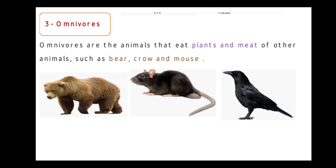Number 3. There are also animals that eat both plants and meat. Like what, Junior 2? Like bear, crow, and mouse. All these animals are called Omnivores. Omnivores are the animals that eat plants and meat.